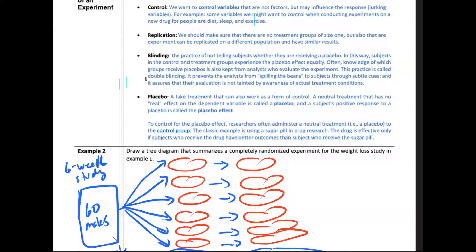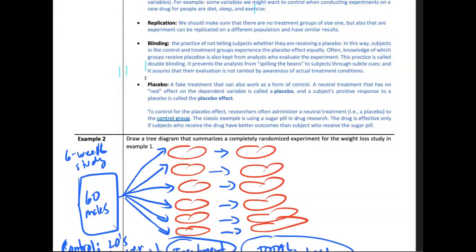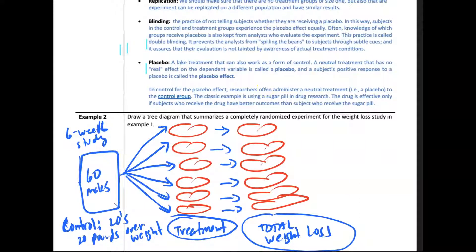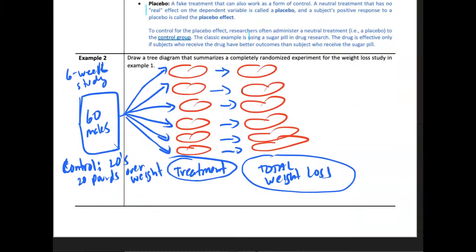A placebo is a fake treatment, meaning that sometimes you give people a fake drug or don't give them anything. It's a placebo—it takes the place of it—just to see if there are any results. Some people get the drug, some people get a placebo, something like a water pill or something like that.